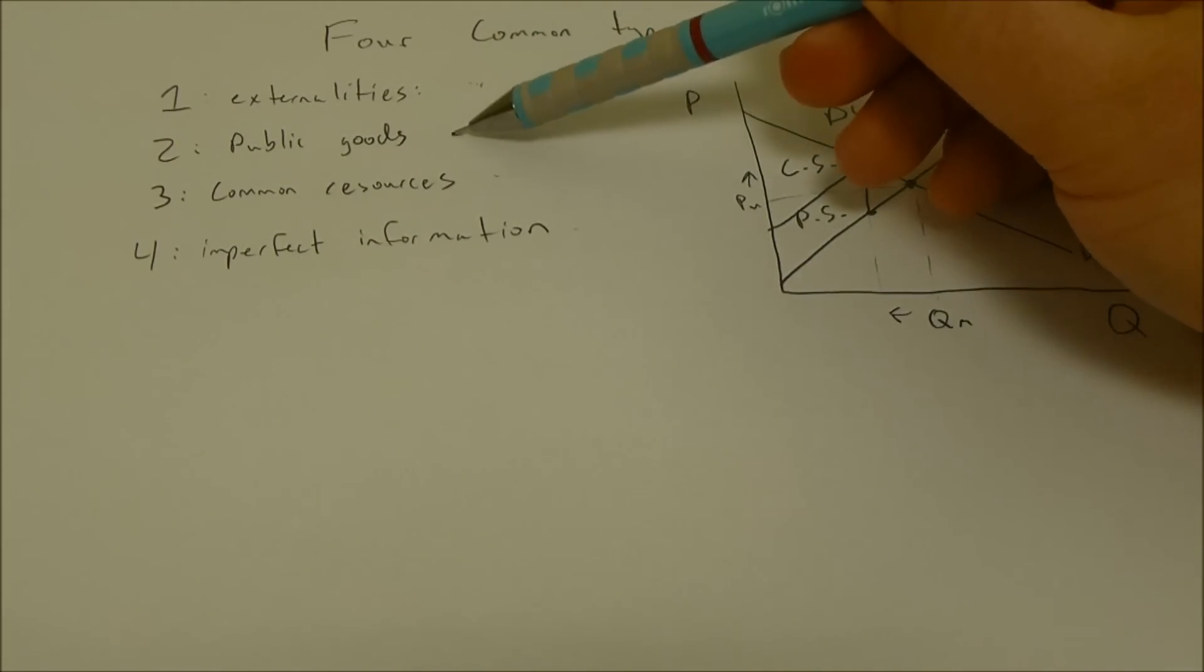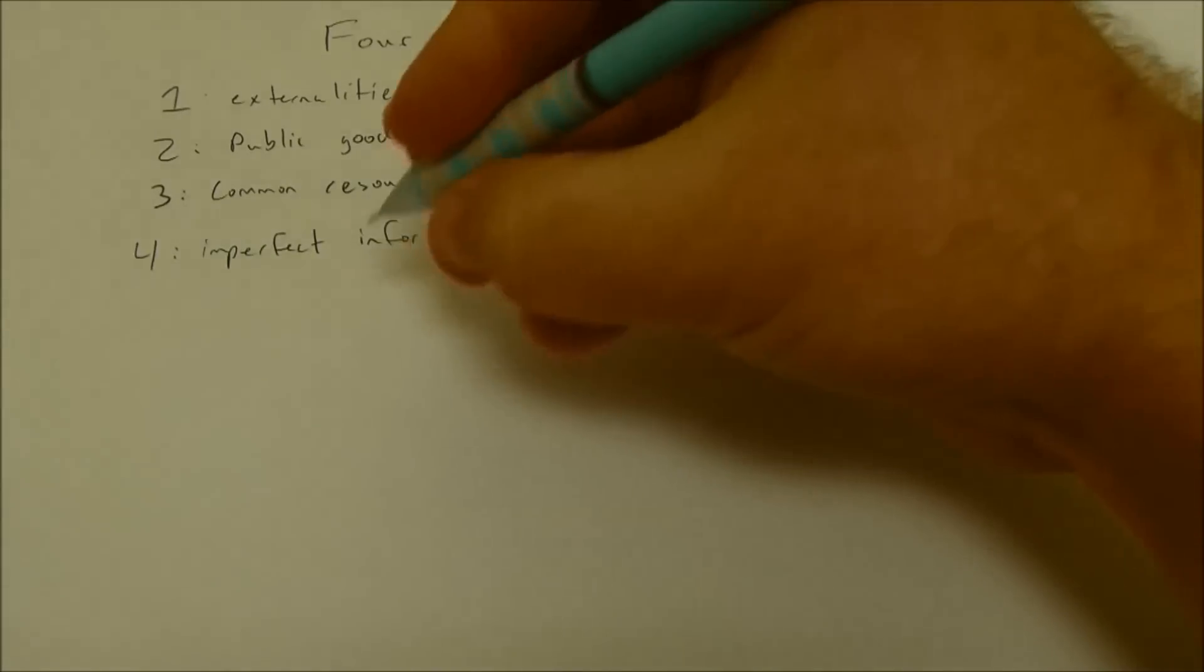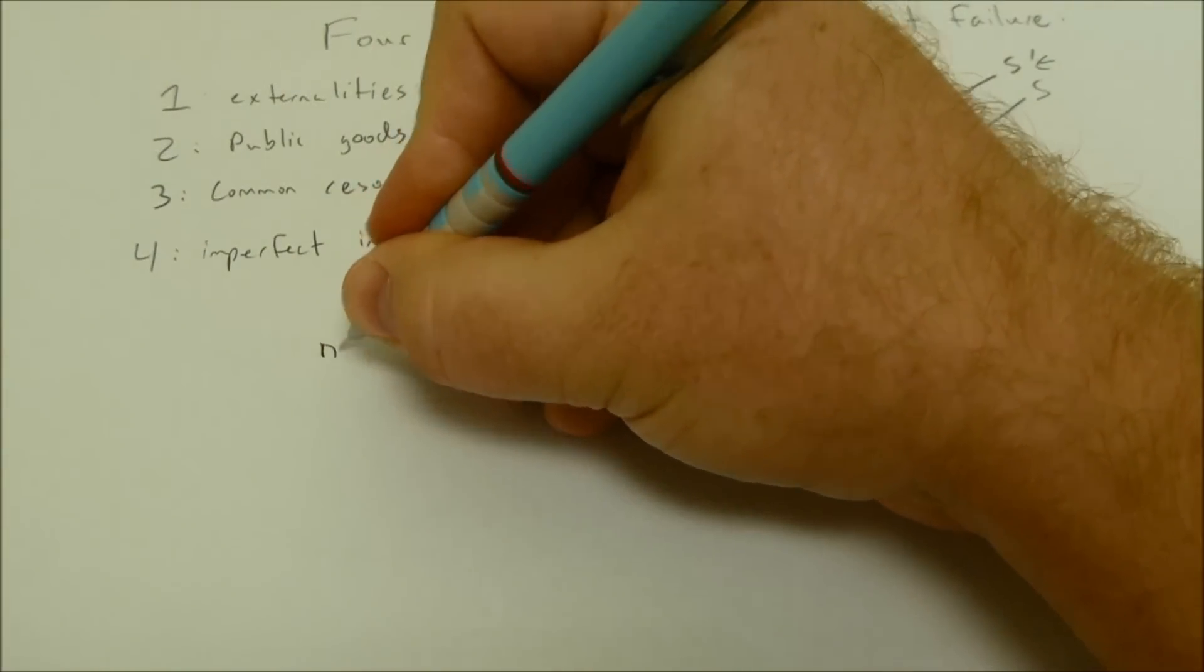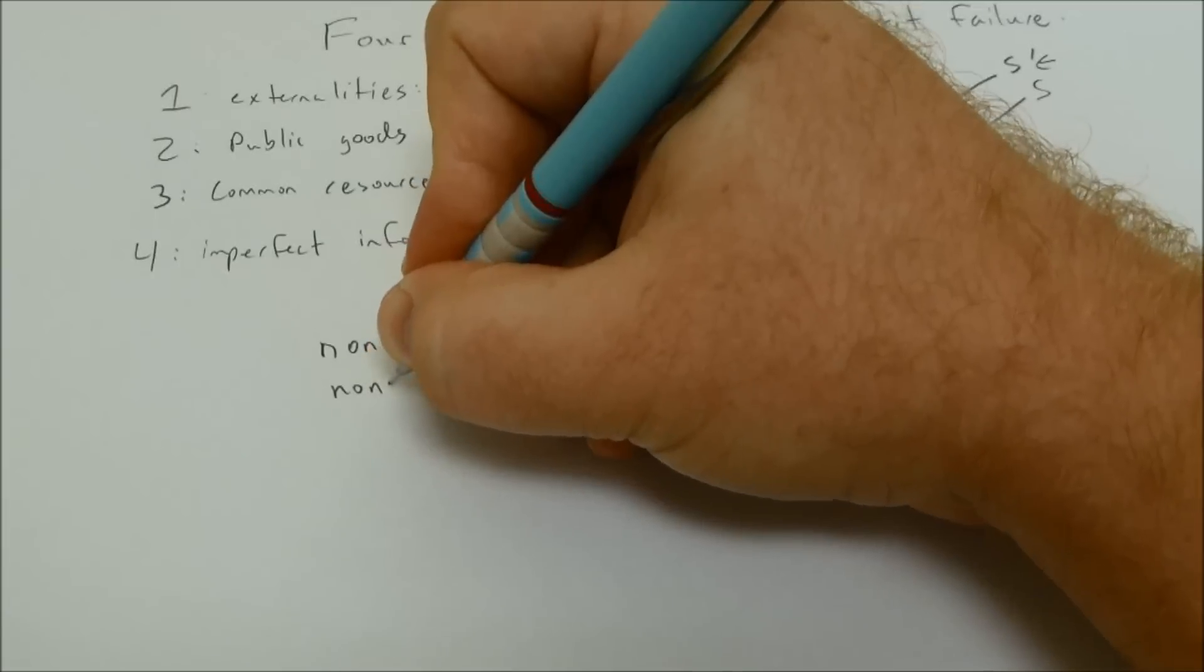Second are public goods. So if it's not a private good, it's a public good, we're going to see problems. Public goods have the characteristic that they're non-rival and non-excludable.